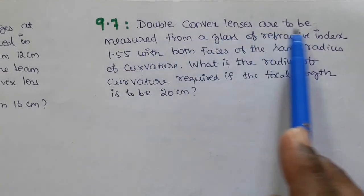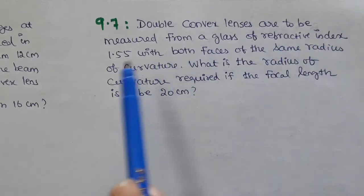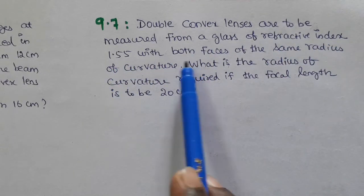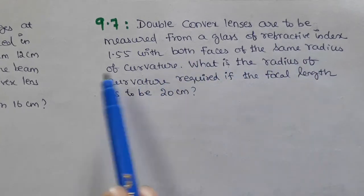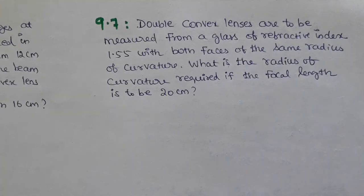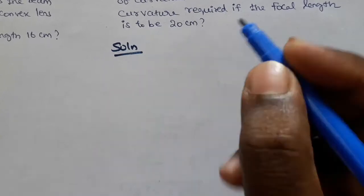Question 9.7: Double convex lenses are to be made from glass of refractive index 1.55 with both faces of the same radius. What is the radius of curvature required if the focal length is to be 20 centimeters?